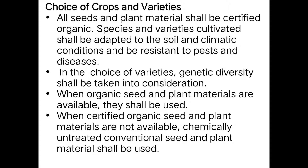The species cultivated should be suitable to the various soil and climatic conditions and resistant to pests and diseases. In the choice of varieties, genetic diversity shall also be taken into consideration during cultivation. When certified organic seed and plant material are not available, chemically untreated conventional seed and plant material shall be used.